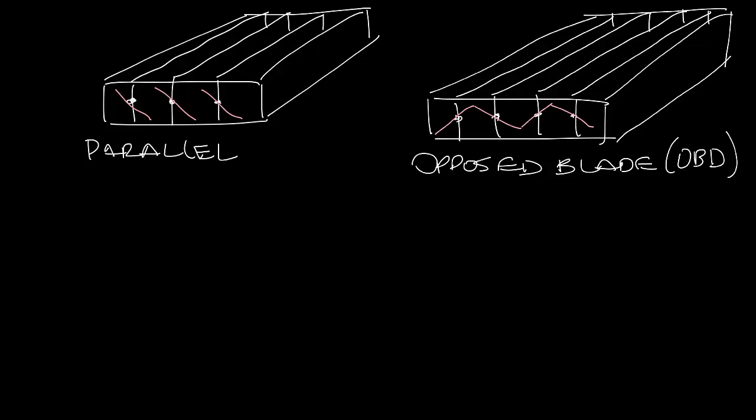OBDs allow air flow to move straight through the damper which gives you better air flow. Damper blades are usually gang operated as well. That way when you move the damper lever to open or close the damper all the blades move at the same time.